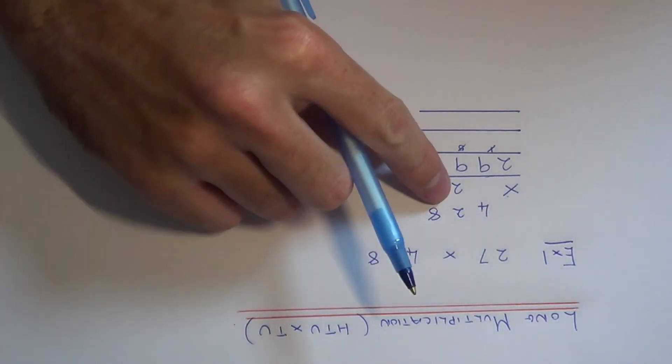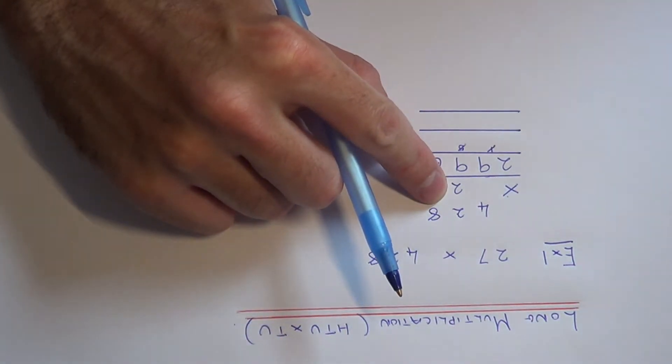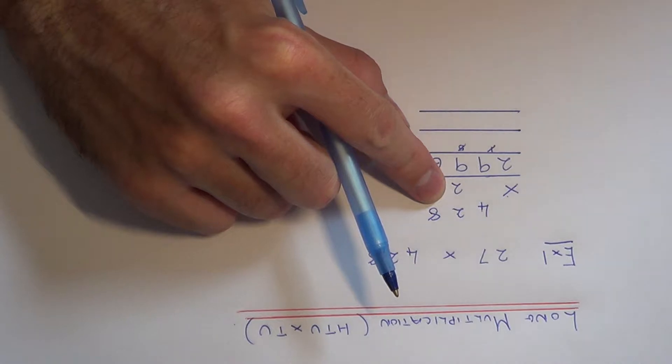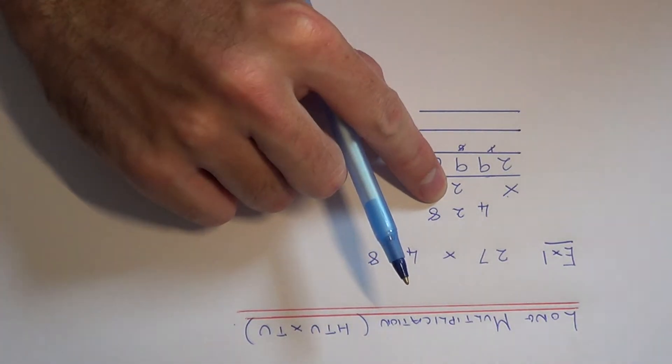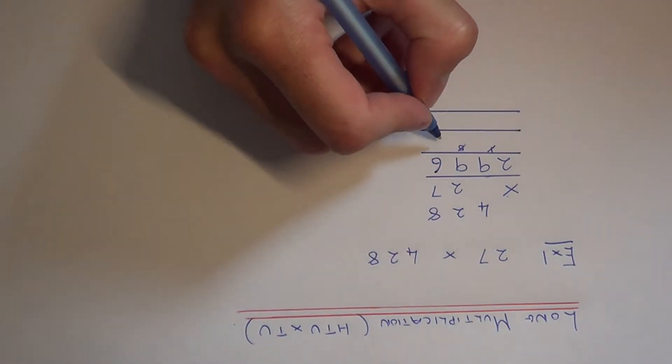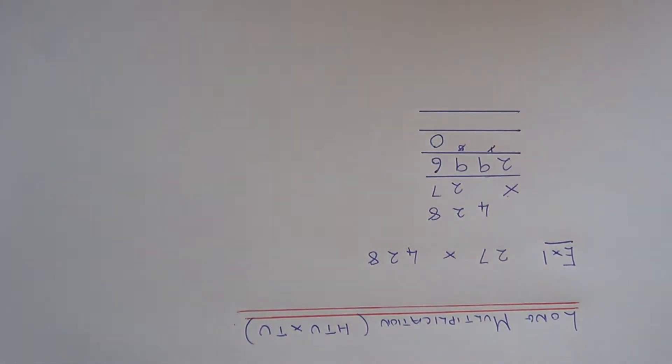So for the second line we need to work out 428 times the 2 which is really 20. So we need to first of all put a 0 at the end of the second line.